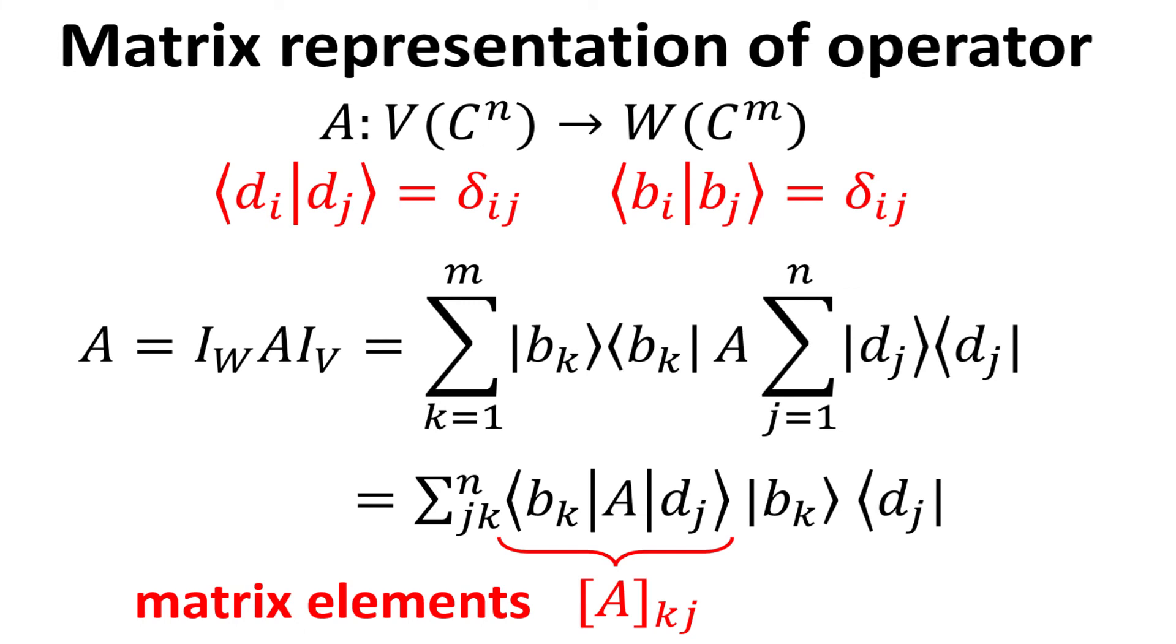With some algebra, we obtain the matrix elements of the operator A, expressed in terms of the basis b sub k and d sub j of these two vector spaces. Corresponding to an input vector d j and output vector b k.